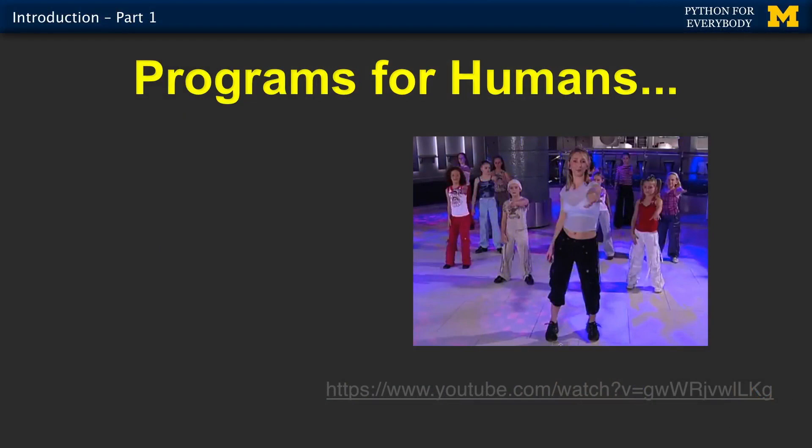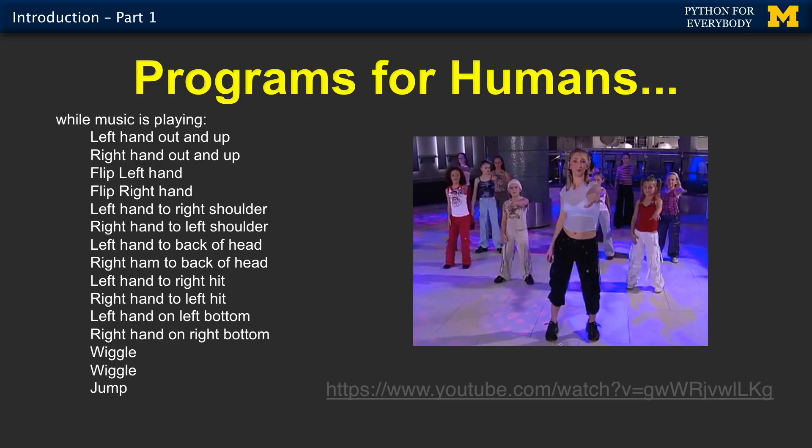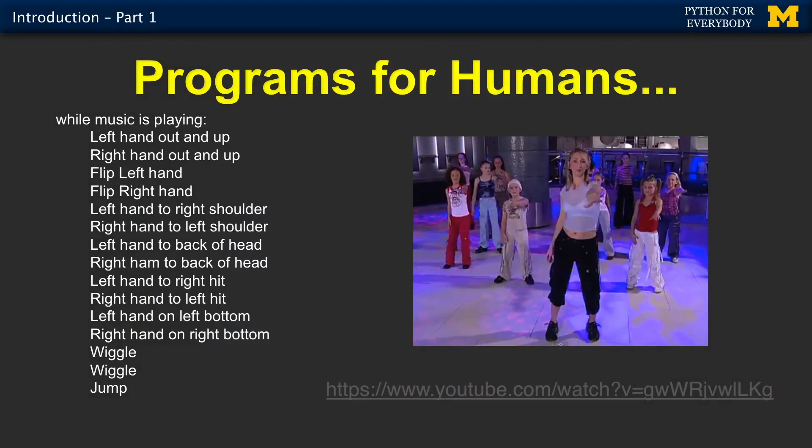What's in a set of instructions? Here is a program for a human being. I may be showing my age, but this is a YouTube video — hopefully not taken down by copyright — of the song called the Macarena. The Macarena is an algorithm, a series of steps: you put your hands up, wiggle, wiggle, turn around. There's a looping thing — as long as the music plays, you put your left hand out, your right hand out, flip your left hand, flip your right hand. Now I want you to look at this slide — there are three bugs in this program. I'm going to stop for a second.